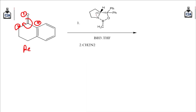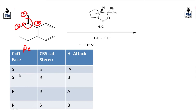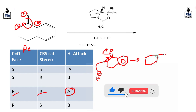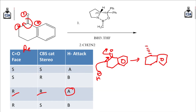Hence this is the re-face, and our catalyst has R stereochemistry. In the presence of BH3, hydride delivery will take place. Checking our table: re-face with R-CBS catalyst means hydride attack takes place from above the plane. So above-the-plane attack occurs on the keto group, and the O group goes to below the plane. We get our product with O-negative.